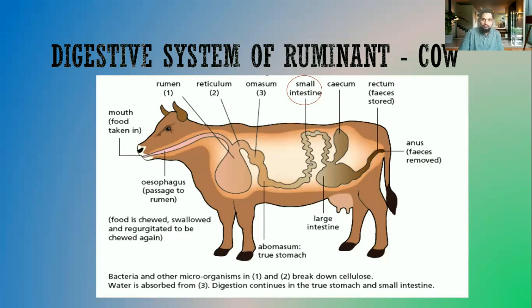Also in the duodenum, the liver produces bile, and the bile enters the duodenum to help digest fats. When we say bile helps digest fat, it doesn't directly break down the fat — what the bile does is break fat molecules into smaller and smaller pieces, so that enzymes have a larger surface area and can catalyze the process at a faster rate.